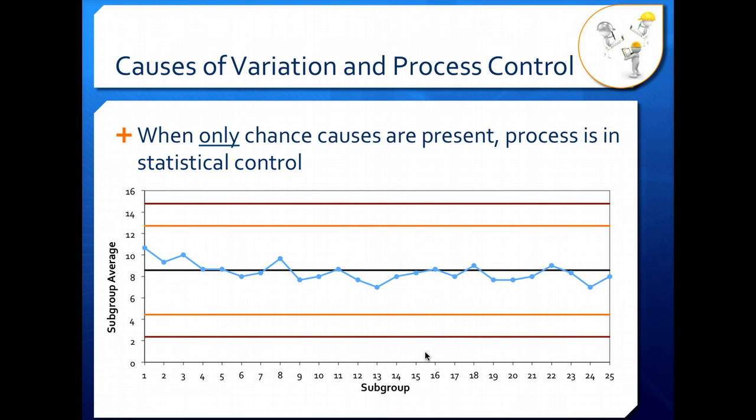When we have only chance causes present, we have natural variation only. We say our process is in statistical control. And your control chart would look something like this. Everything is near the process average. We're within our warning limits and we're definitely within our action limits. So we say this is in statistical control. Keep in mind the process still may not be producing product in specification. Specification is different than control. So you may have a process that's perfectly in control and still producing out of spec product because your process is just not able to meet your upper and lower specification limits.